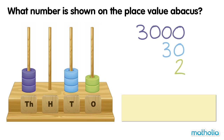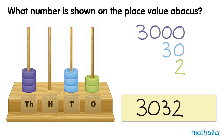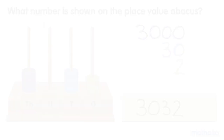The number shown on the place value abacus is three thousand and thirty-two.